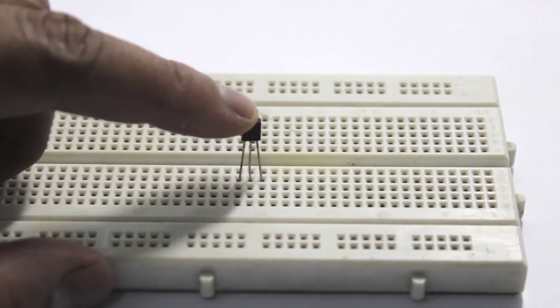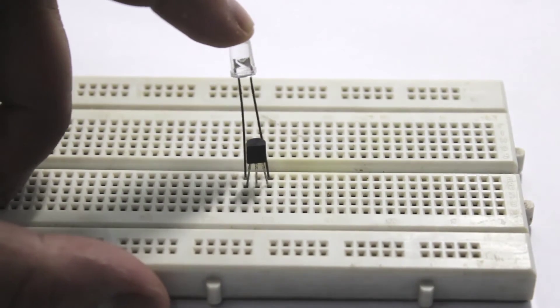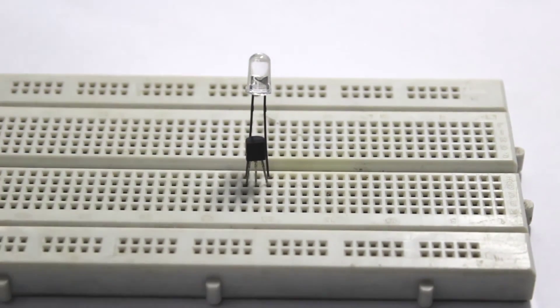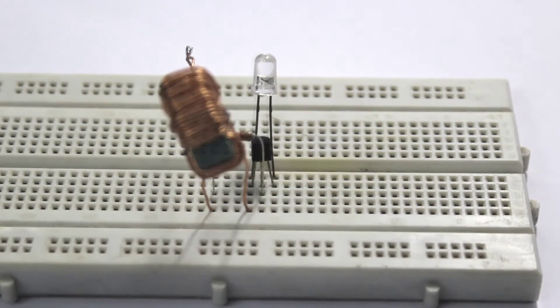The working principle of this circuit is a transistor acting as a switching device to switch the waveform to the primary turns of the toroid, which generates a higher voltage in the secondary turns.